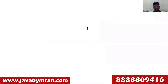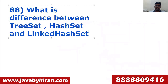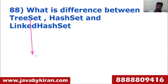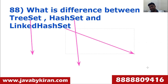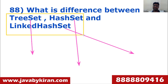Regarding TreeSet, LinkedHashSet, and HashSet: TreeSet sorts the elements, LinkedHashSet maintains insertion order, and HashSet stores elements randomly. All three classes belong to the Set interface.